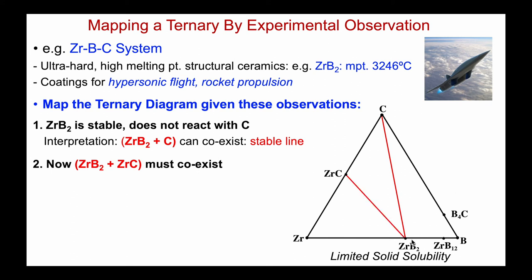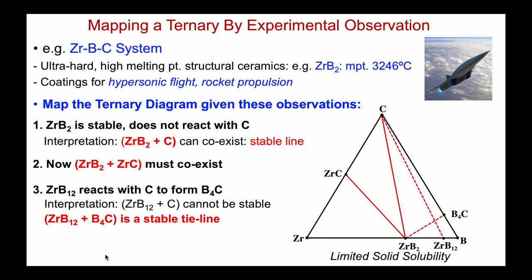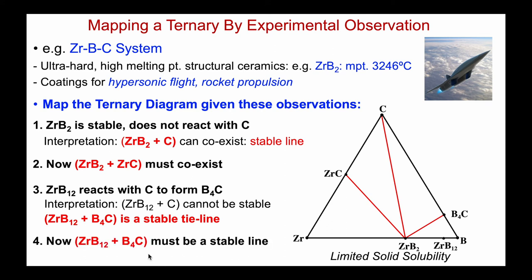Now we'll work on the right side, where there are still a few possibilities — for example, ZrB₂ could coexist with B₄C, or it could be carbon and ZrB₁₂. We're told experimentally that ZrB₁₂ reacts with carbon to form B₄C — so carbon and ZrB₁₂ don't form a stable two-phase assemblage, they react to form something else. So we get rid of that as a possible tie line and enter ZrB₂–B₄C instead. Down here there's only one possibility left: B₄C and ZrB₁₂ must be a stable assemblage.